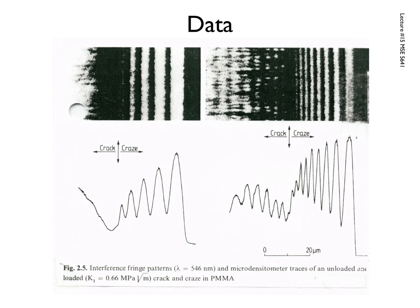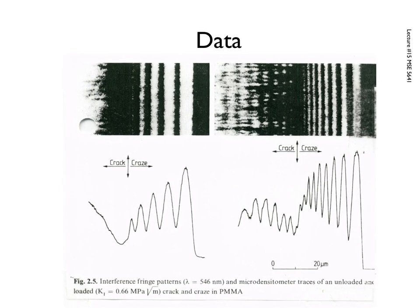Let's look at some data. Out here we've got a crack, and over here we have the crazed matter. On the left-hand version is no load — meaning we have a crack that has a zone of crazes in front of it. At one point it was advancing, and then we took all the load off. So we have regions in which we still have crazed matter — these banded structures — and then the crack itself where we don't have any crazed matter. This is without load.